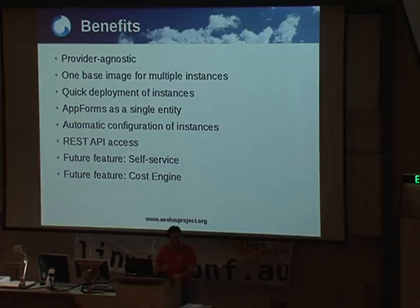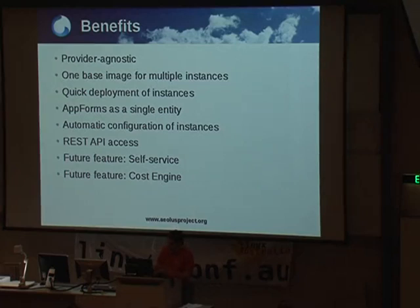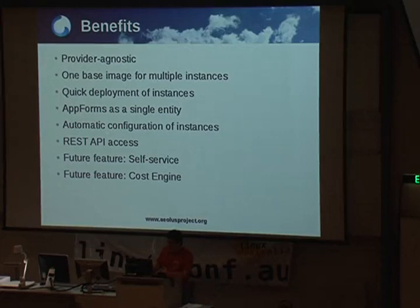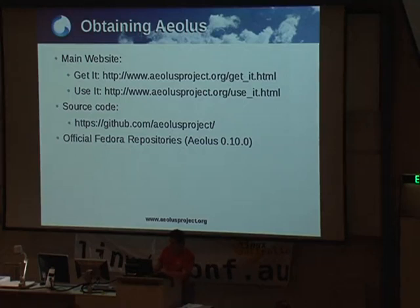The benefits include: it's provider agnostic; one base image for multiple instances; quick deployment of instances; app forms — a collection of instances together as a single entity, so you can say 'I want to launch this WordPress blog, a Drupal site, a Salesforce instance'; automatic configuration of instances because of the deployment and image files; and REST API access for ELIS. Future features include self-service via WingedMonkey and a cost engine to calculate costs associated with public clouds. The main website has pages on how to get it and how to use it. You can compile from source on GitHub, and there's an older version on the official Fedora repositories.